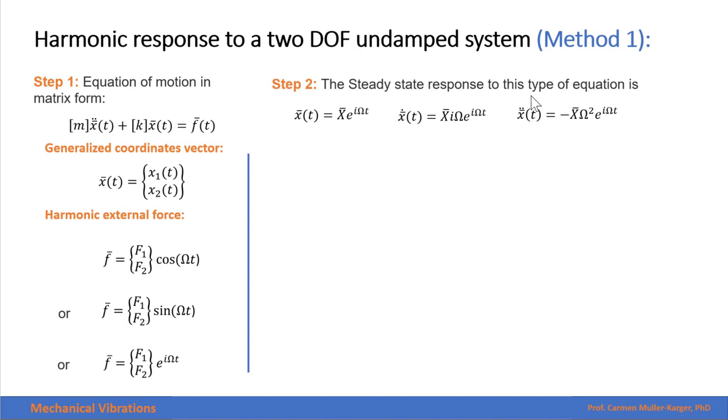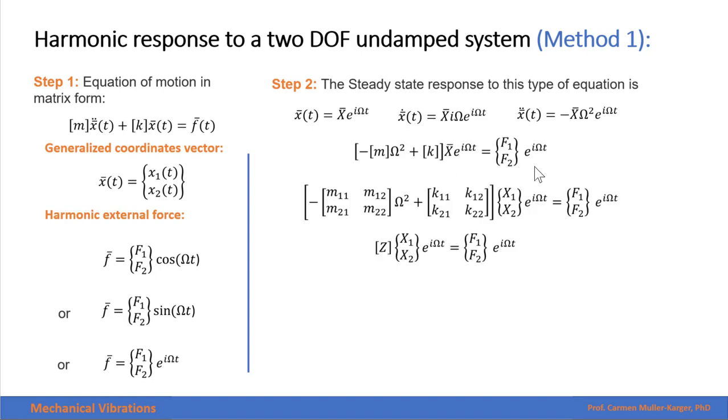If we introduce this response and the second derivative into our original equation, we get this matrix right here. And as you see, we can find the amplitude of the response, since these two terms are equal, by inverting this matrix over here.